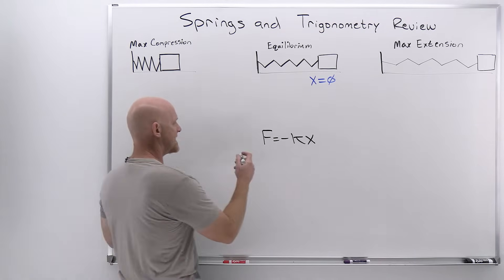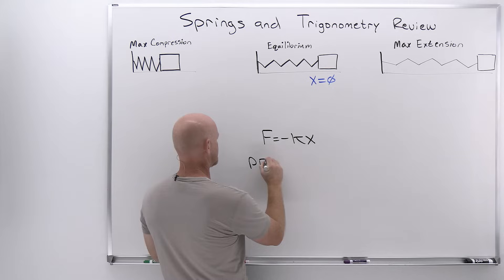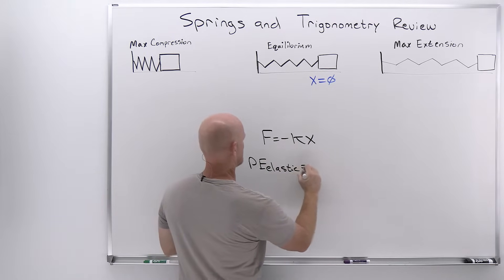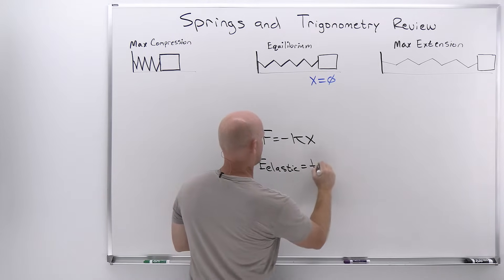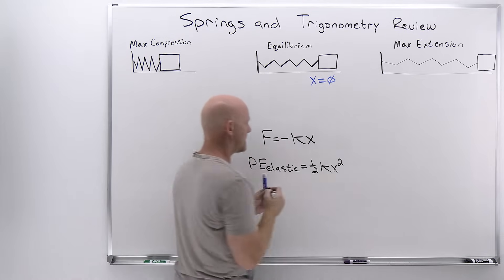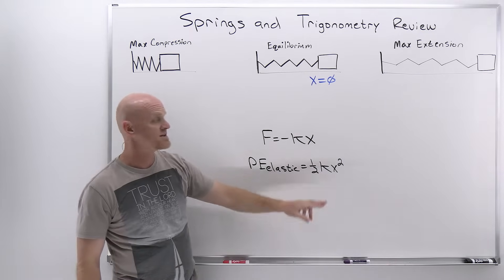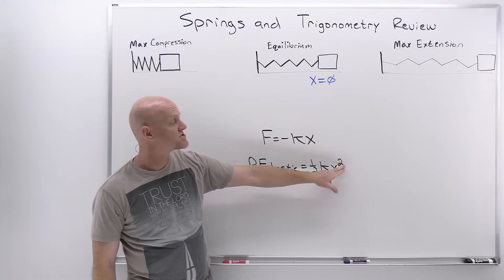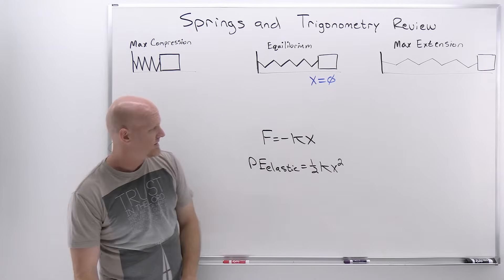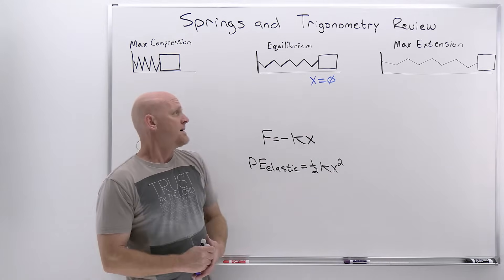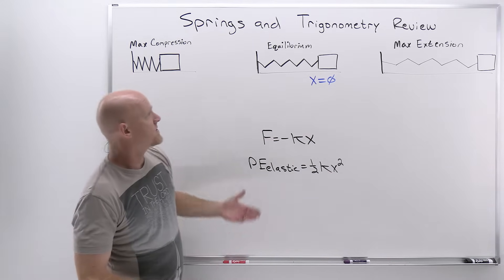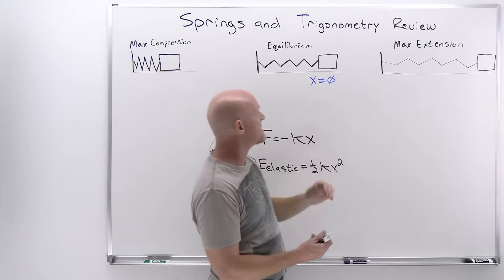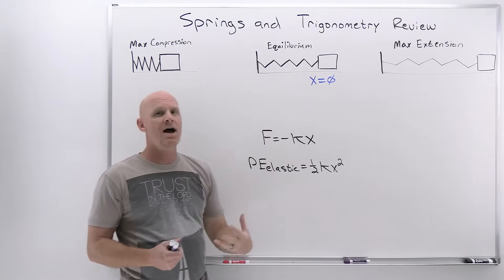We also talked about the potential energy of a spring, which we call elastic potential energy. It equals one half k x squared, so it's proportional to the spring constant, and proportional to the displacement away from equilibrium squared. At the point of maximum compression or maximum extension, that is where your displacement is at a maximum.